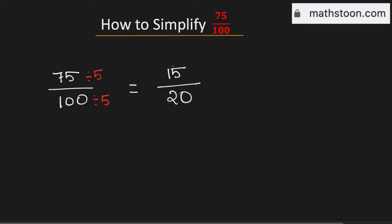Now you can see that both the numbers 15 and 20 are divisible by 5. So dividing them by 5, we get 3 divided by 4.